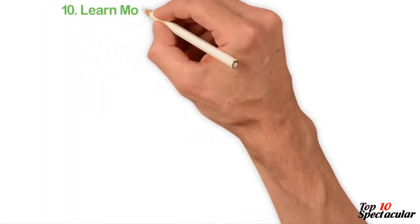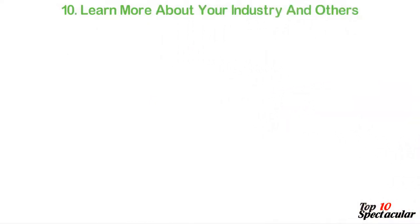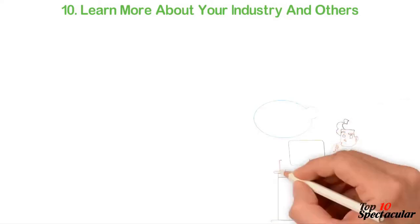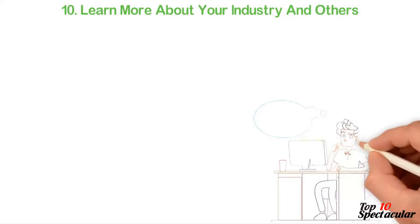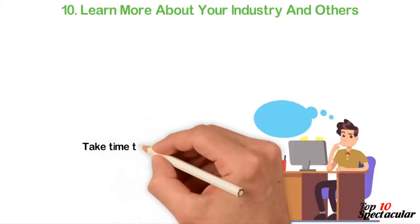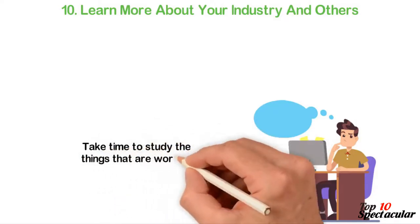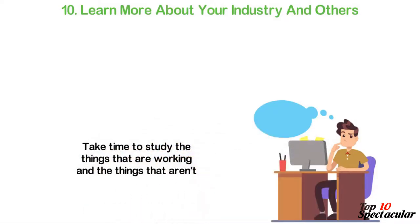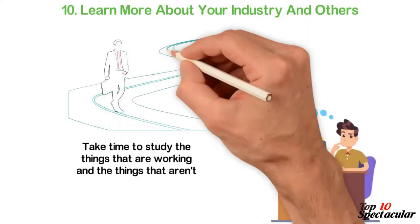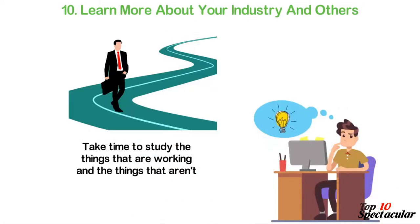10. Learn more about your industry and others. Now that you have everything figured out, research as much as possible about your industry, such as finding out the top individuals in your industry, the moving trends and every other thing there is to know. Take time to study the things that are working and the things that aren't. This information will help you position your business in the right place. Once you have these 10 things figured out, then you are ready to start your own business and begin your journey to entrepreneurship.